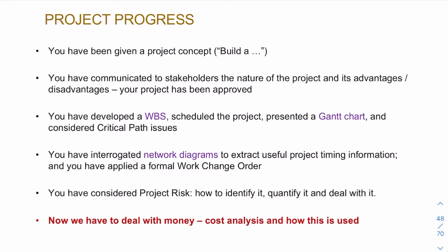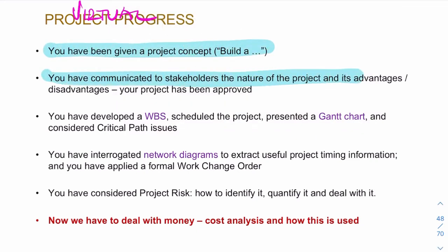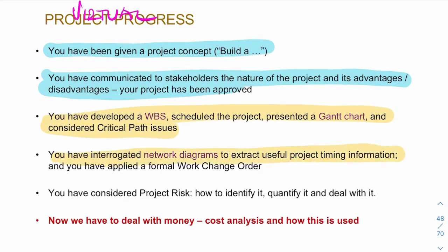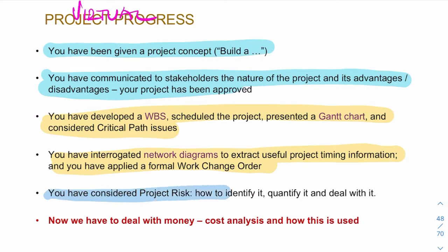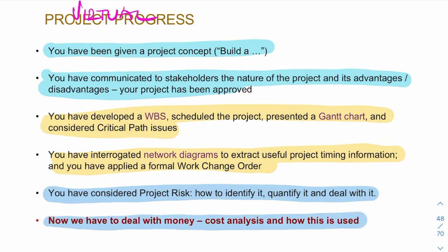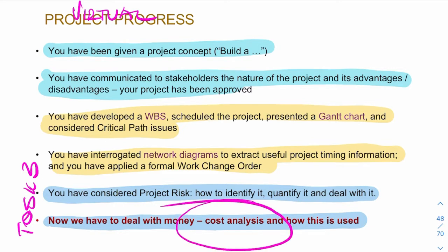A quick reminder of where we're at in terms of your virtual project — the dinosaur park. You've done the planning for task one, the WBS and network diagrams and Gantt chart for task two. You should have made a start on task three, which has two elements: risk and cost. This is where the contents of today's lecture will be implemented.